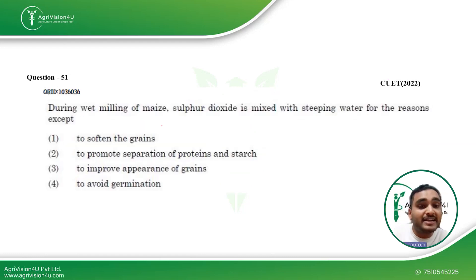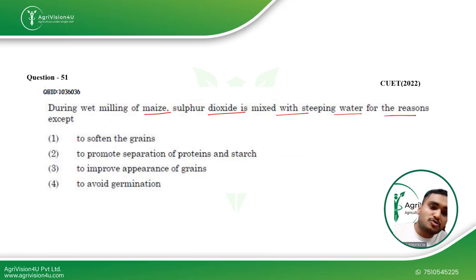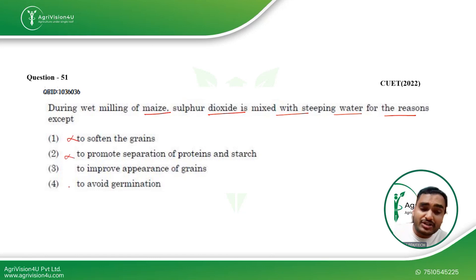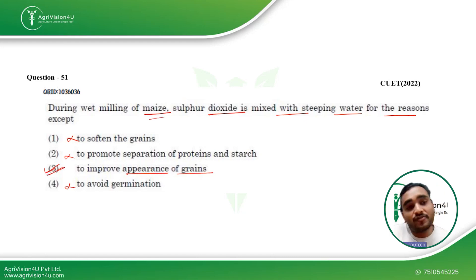During wet milling of maize, sulfur dioxide is mixed with steeping water. Is it to soften the grains? No. To promote separation of proteins and starch? No. To avoid germination? No. SO2 is mixed with steeping water during milling of maize to improve the appearance of the grain. So option three is the right answer for this question.